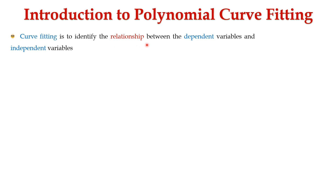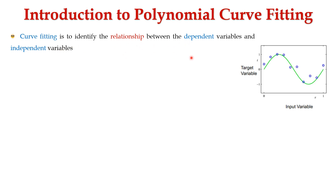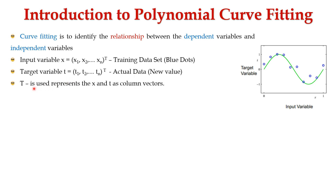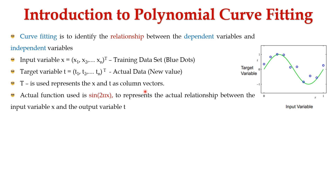Curve fitting is to identify the relationship between the dependent variables and independent variables. In the diagram, the input variable x is represented as x1, x2 up to xN transpose — also called the training dataset, represented in blue colored dots. The target variable t equals t1, t2 up to tN transpose, which is also called actual data. Transpose is mainly used to represent the input variable x and the target variable t as column vectors.